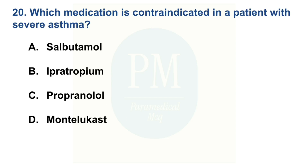Which medication is contraindicated in a patient with severe asthma? Option A: salbutamol. Option B: ipratropium. Option C: propranolol. Option D: montelukast. The correct option is Option C: propranolol.